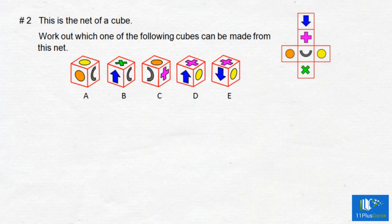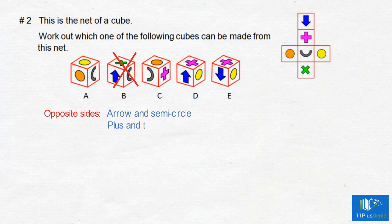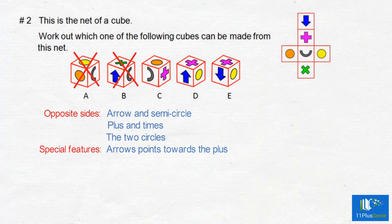The red triangle must point towards the circle. Example 2: you are given a net of a cube and must choose from the answer choices the cube that can be formed. First, identify the opposite sides: the arrow is opposite the semicircle — we can eliminate B because they are next to each other on that cube. The plus is opposite the times sign. The two circles are opposite — we can eliminate A because the two circles are next to each other.